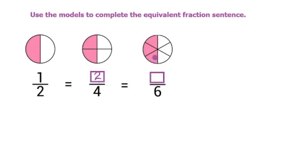There are one, two, three — three colored ones out of six: one, two, three, four, five, six. We know there are six total equal shapes, so three out of six are shaded. We can put that in as three out of six. So we know all these fractions are equivalent because the colored areas are the exact same size and shape for each one.